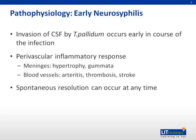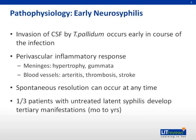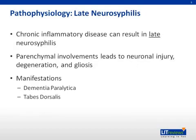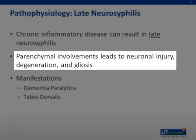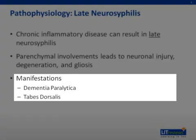Spontaneous resolution of the infection may occur in some cases, but patients with persistent meningitis are more likely to develop manifestations of tertiary neurosyphilis. About one-third of patients with untreated latent syphilis develop tertiary manifestations after a variable period ranging from months to years. Late neurosyphilis results from chronic inflammation with parenchymal involvement causing neuronal degeneration and gliosis, manifesting in two ways: dementia paralytica and tabes dorsalis.